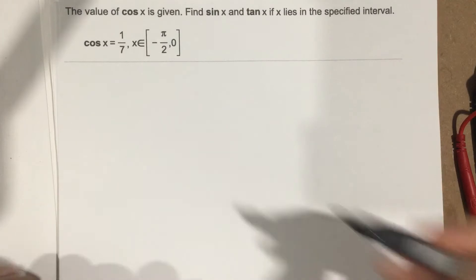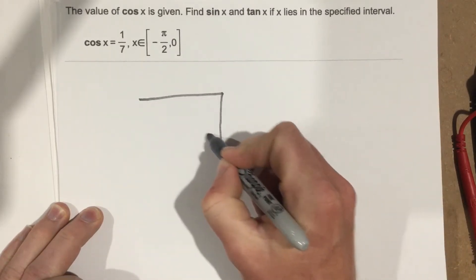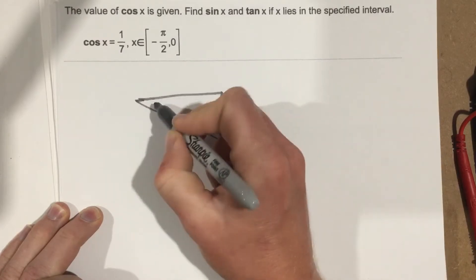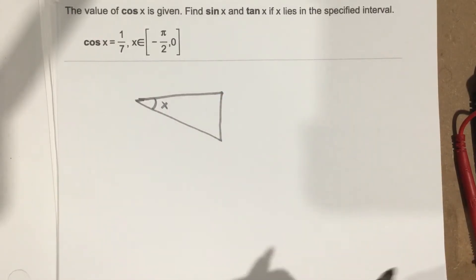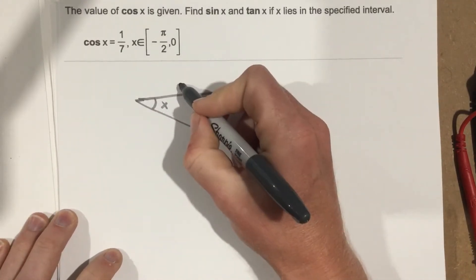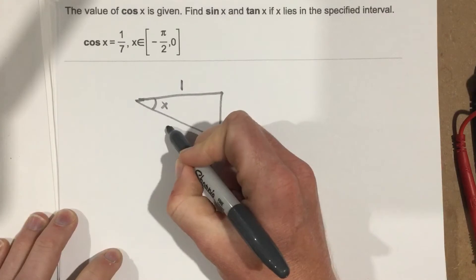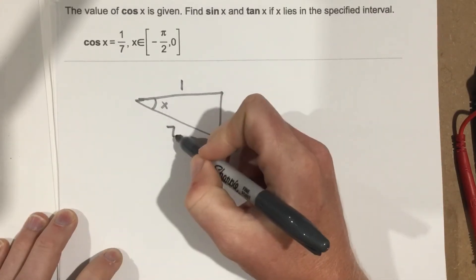So let's draw a triangle in the 4th quadrant. We'd have a triangle that looked like so, and this would be our angle x. They say cosine is 1 over 7, we know cosine is the adjacent over the hypotenuse. So that's what we have here is the adjacent side and the hypotenuse.